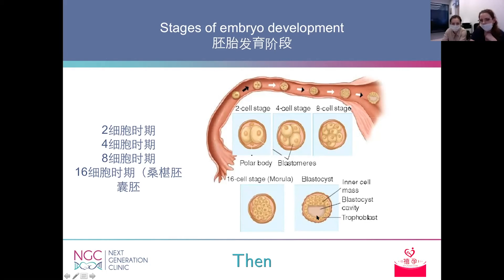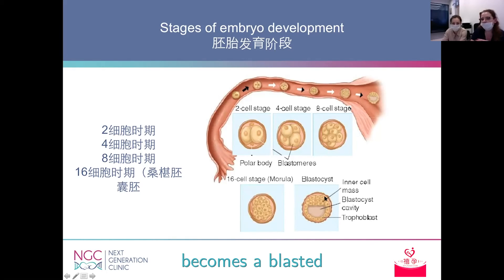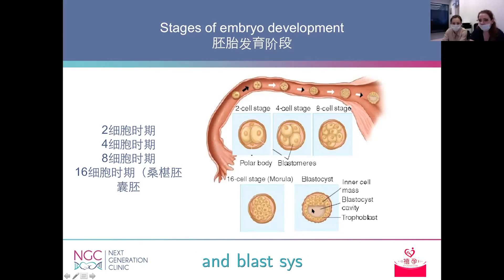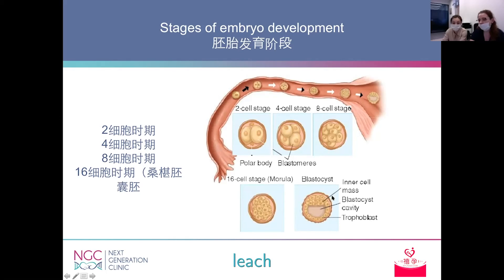Then, at day five or sometimes later, the embryo becomes a blastocyst. At this stage, the embryo consists of trophectoderm, inner cell mass, and a blastocyst cavity. Implantation will start after the embryo reaches this stage.